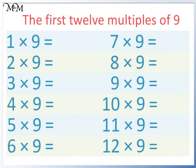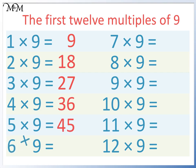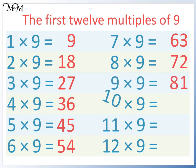We will recap the first 12 multiples of 9. Pause the video and fill in the answers. 1 times 9 equals 9, 2 times 9 equals 18, 3 times 9 equals 27, 4 times 9 equals 36, 5 times 9 equals 45, 6 times 9 equals 54, 7 times 9 equals 63, 8 times 9 equals 72, 9 times 9 equals 81, 10 times 9 equals 90, 11 times 9 equals 99, and 12 times 9 equals 108.